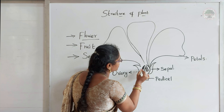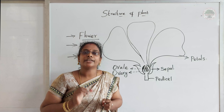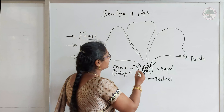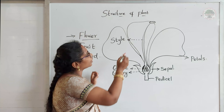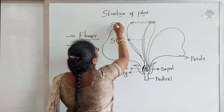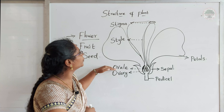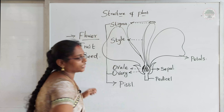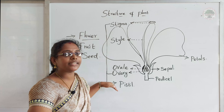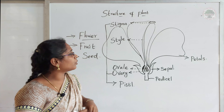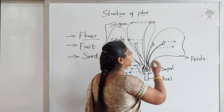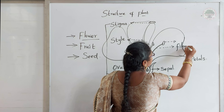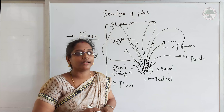Next you can see a pitcher-like part at the base, and this is called the ovary. Inside the ovary you can see very small round structures called ovules. So inside the ovary you can see ovules. The ovule is the female reproductive organ. This continues with a long filament called the style, and at the top there is a small bulb-like structure called the stigma. Collectively, the ovary, ovule, style, and stigma together are called the pistil — the female reproductive organ.